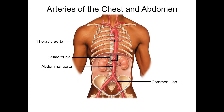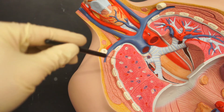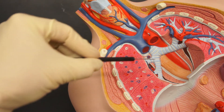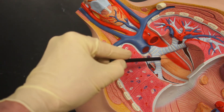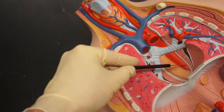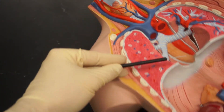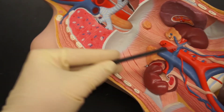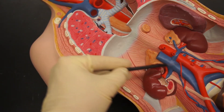Here we have a view of the thoracic aorta, the abdominal aorta, the iliacs, and the celiac trunk. On this model we can also see different regions of the aorta — the thoracic aorta and the abdominal aorta.